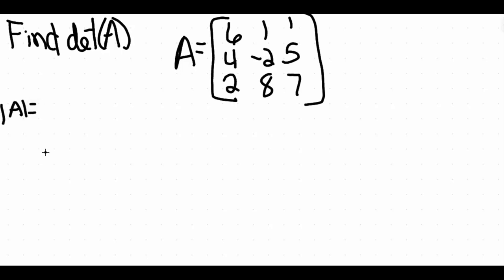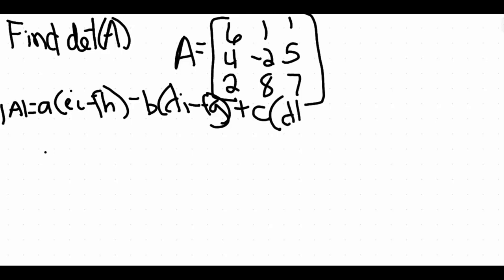The determinant of A, shown with those two bars, is found by taking A times (EI minus FH) minus B times (DI minus FG) plus C times (DH minus EG). I told you it was a long one. Essentially this is a plug and chug question. We need to plug in all the respective values into this formula and simplify.